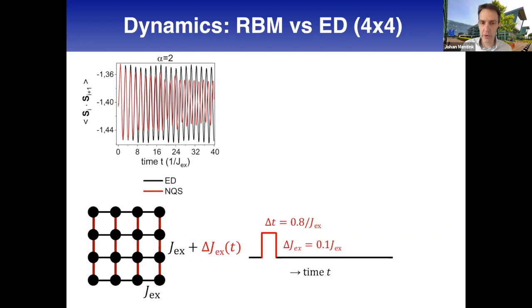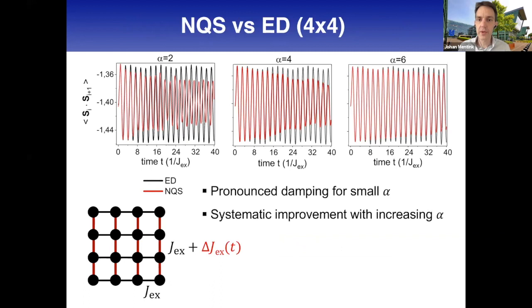There may be many origins of that - one is time truncation error in integrating the ordinary differential equation, another is Monte Carlo error. Both we excluded by sampling all states with full summation and exact derivatives for this 4x4 system, also by systematically reducing the time step. We found the limiting error is just the expressibility of the wave function. If you increase the hidden unit density, you rapidly approach the exact evolution of the quantum system - this was a very happy result for us.